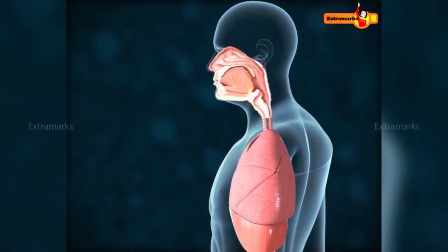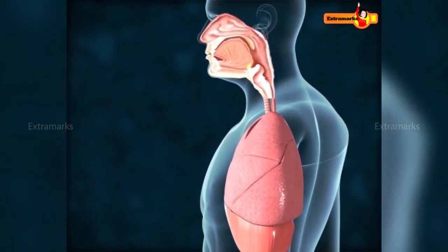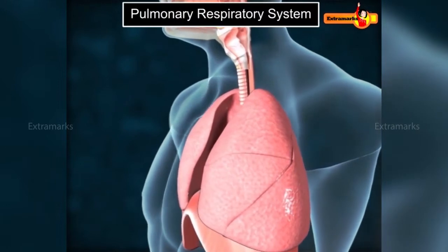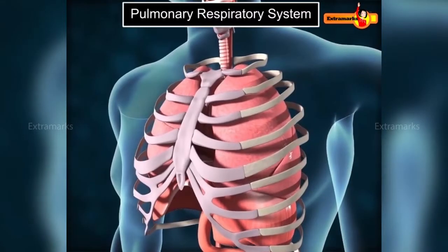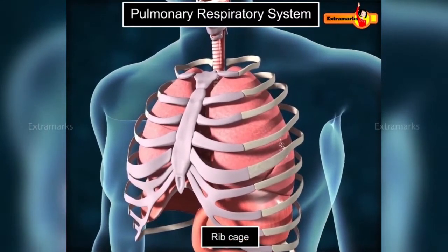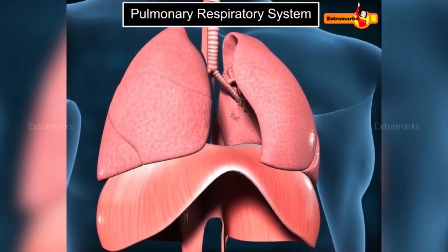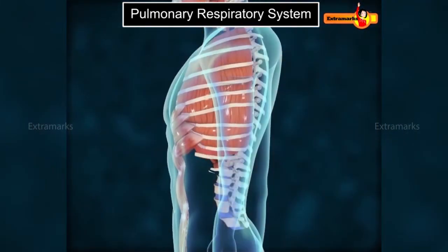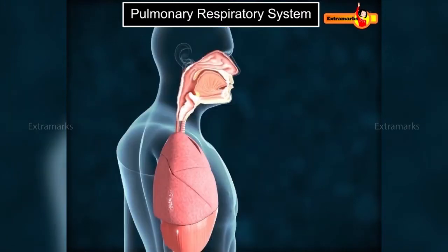Humans have lungs as respiratory organs, making us a typical example of organisms with a pulmonary respiratory system. The pulmonary respiratory system occupies the major part of the thoracic cavity. The ribcage surrounds and protects the lungs inside the thoracic cavity, and the floor is formed by a dome-shaped diaphragm, which along with rib muscles changes the volume of the thoracic cavity during inspiration and expiration.